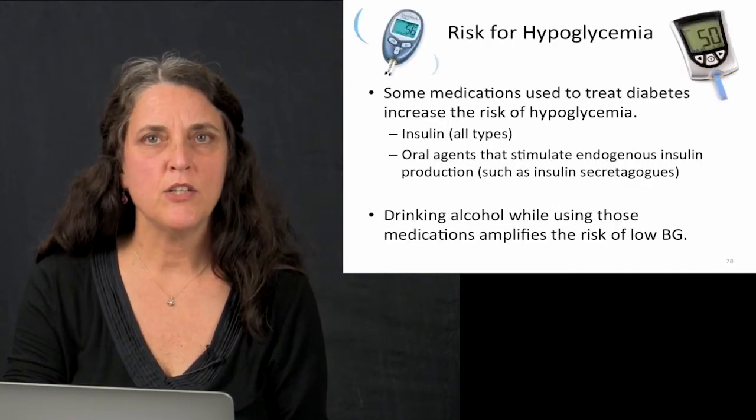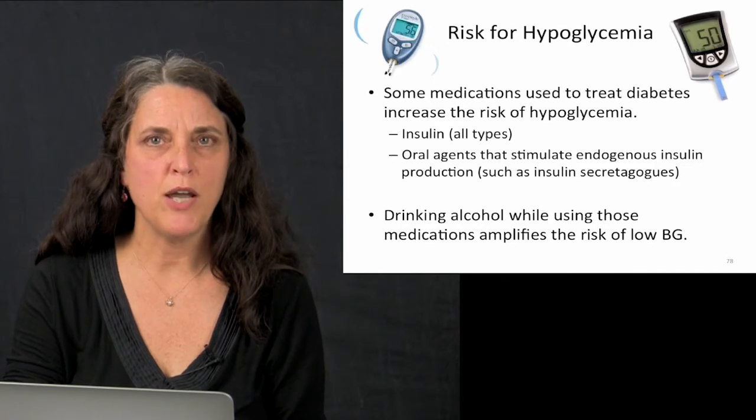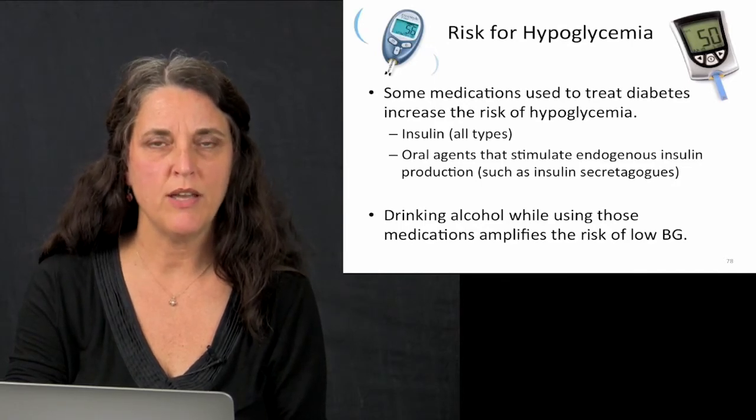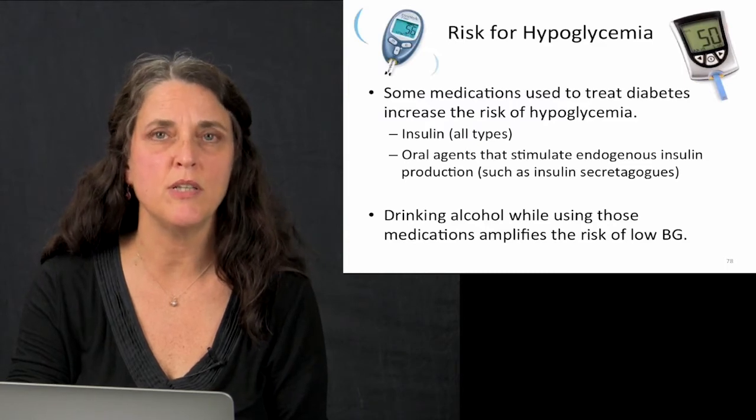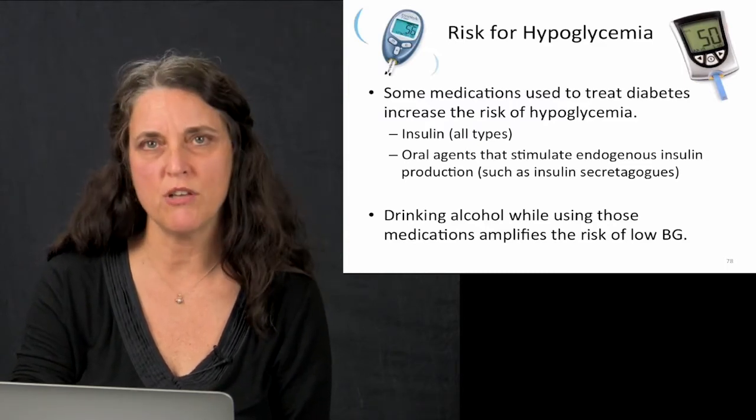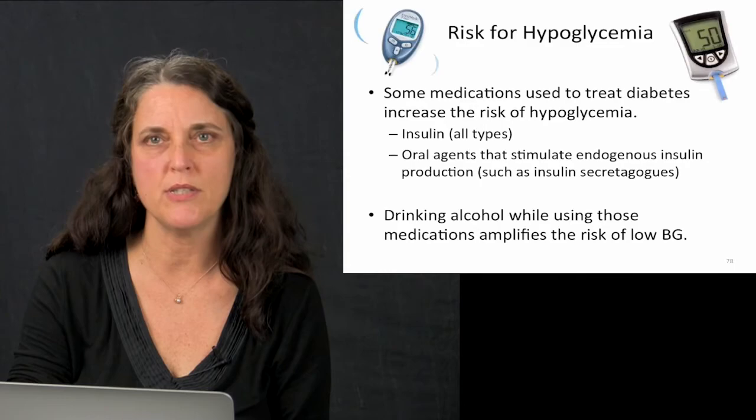People who take insulin, all types, are at risk for hypoglycemia if they drink. That risk is also for people who take oral agents that stimulate insulin production, such as sulfonylureas, glyburide, glipizide, and amaryl.